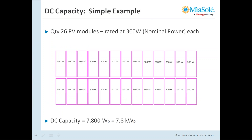Let's do a quick example. If you have 26 PV modules rated at 300 watts each, then you have a DC capacity of 7,800 watt peak, or equivalently 7.8 kilowatt peak. Simple, right?